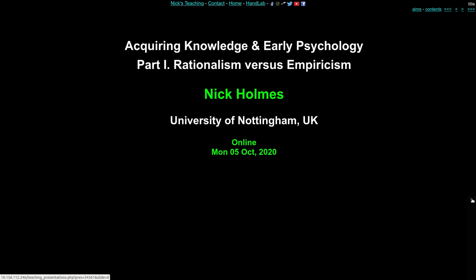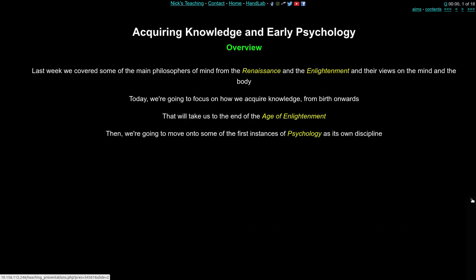In the first of four parts, we're going to talk about rationalism versus empiricism. The lecture as a whole is in four parts, and last week we covered some of the main philosophers from the Renaissance and the Enlightenment and their views on the mind and the body, on good and evil, as well as some more ancient Greek philosophers.